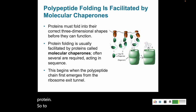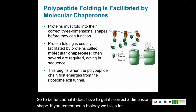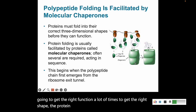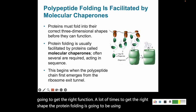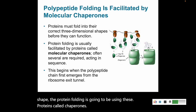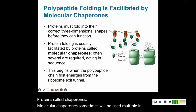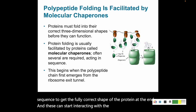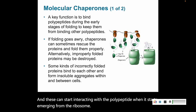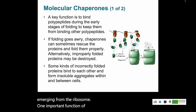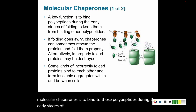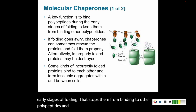To be functional, the protein has to get its correct three-dimensional shape. In biology, structure leads to function — if you don't have the right shape, you won't get the right function. A lot of times, protein folding is assisted by proteins called chaperones. Molecular chaperones — sometimes used in sequence — help achieve the fully correct shape. They can start interacting with the polypeptide as it emerges from the ribosome, and one important function is to bind early during folding to stop polypeptides from binding to each other and forming large aggregate clumps in the cell.